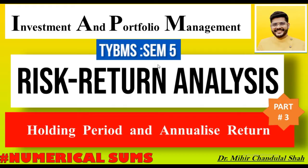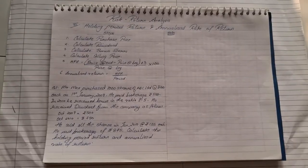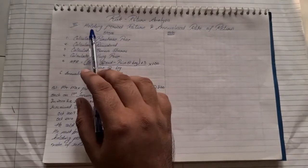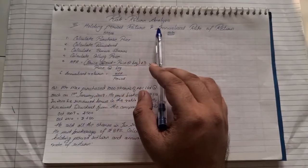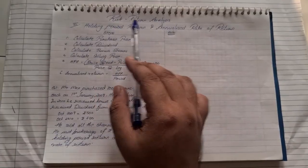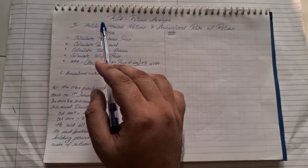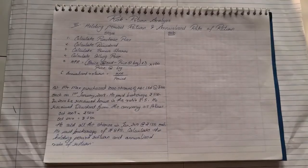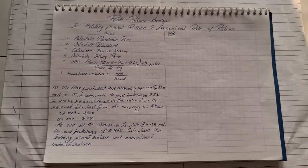Again, a very must topic to be learned by all the BMS students of semester 5. We are going to solve various sums in order to calculate holding period and analyze return. Let us see how to calculate the holding period return and the annualized rate of return. This is the third part of this chapter. The first one was based on expected return and standard deviation. Second is covariance and beta and third is holding period return and the annualized rate of return.